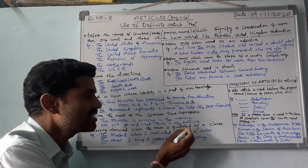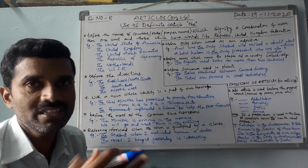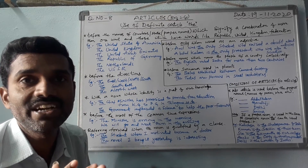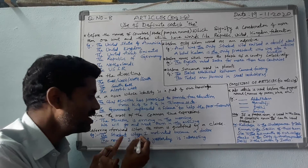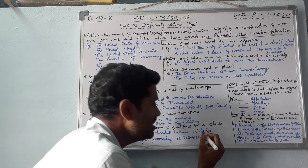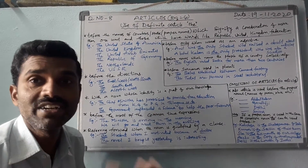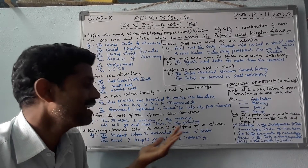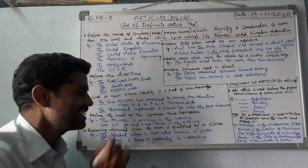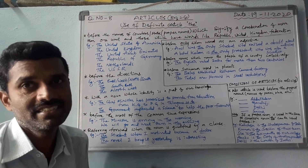Next, referring forward — when the noun is qualified by a clause, the definite article 'the' is used. For example: 'The student whom I motivated became a doctor.' Here 'the student' — which student? The one whom I motivated. Another example: 'The novel I bought yesterday is interesting.' Which novel is interesting? The one I bought yesterday — that novel.